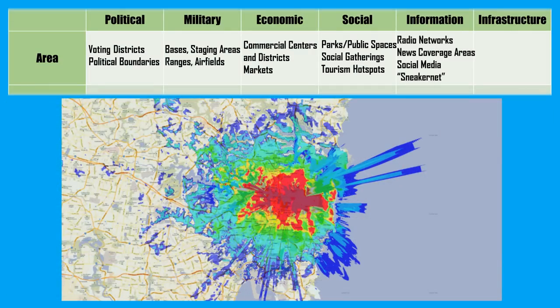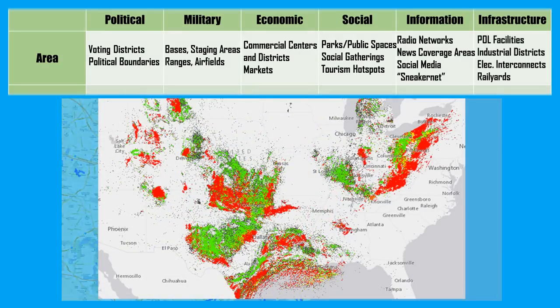Moving on to information areas, we're talking any physical location where information is exchanged. There's a lot of overlap, and in the third world this may be a little bit easier to define, but for the western world, usually what we mean is stuff like radio networks, TV and news sources, local newspapers or propaganda production facilities, and of course social media. A lot of this can be put in this box or the next one — infrastructure areas.